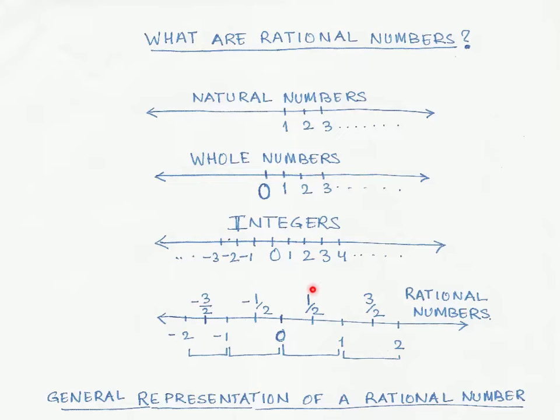Similarly, the midway distance between 1 and 2 is represented by 3/2. The same thing we can apply on the left-hand side of 0, and you can see we have -1/2 and -3/2. So the numbers that lie between the whole numbers like 0 and 1, these are the rational numbers.